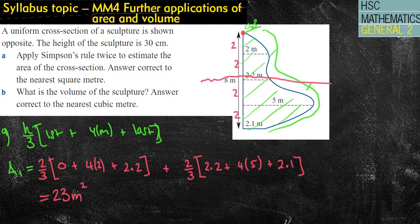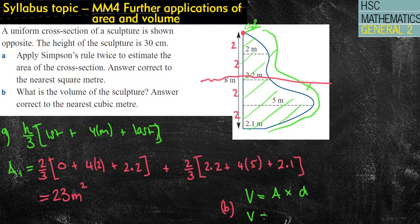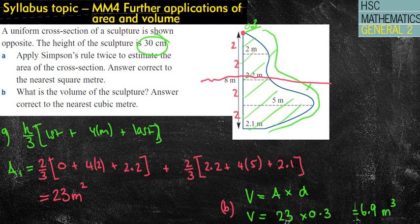Doing all that correctly, we should come up with 23 meters squared for part A. Part B is a really common HSC question: what is the volume of the sculpture? The volume for a prism is the area of the cross-section times the depth. We've just found the area, which is 23 meters squared. The height or depth is 0.3 meters. Multiplying those together gives approximately 6.9 meters cubed.